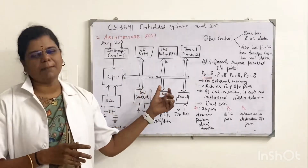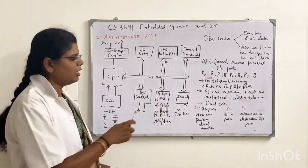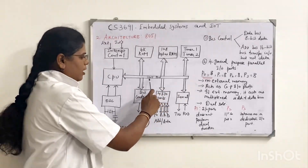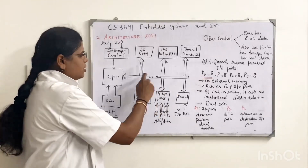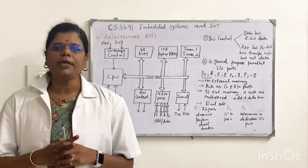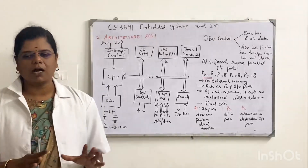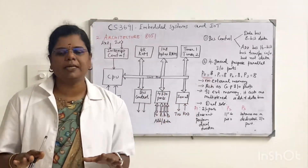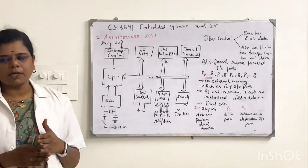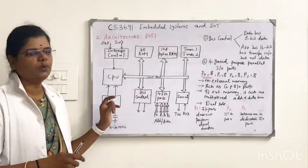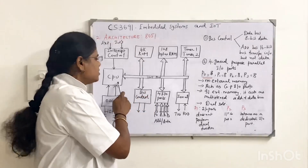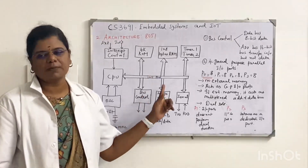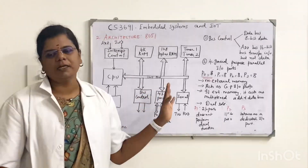The system bus, which is the internal bus, connects all operations. All supplementary blocks are connected through this internal bus. It consists of an 8-bit data bus and a 16-bit address bus, and it is used to connect all internal devices to the CPU. The CPU plays a central and very important role in the 8051 architecture.